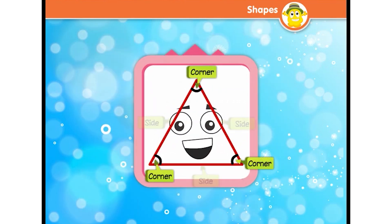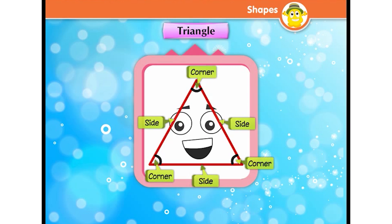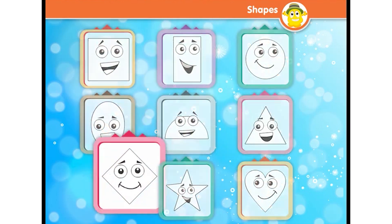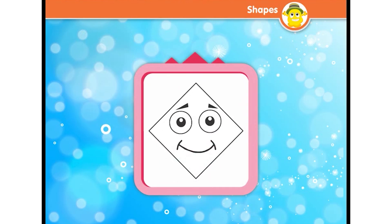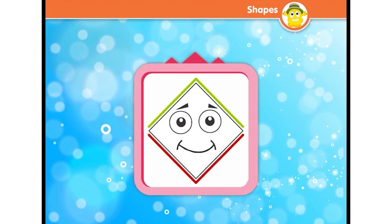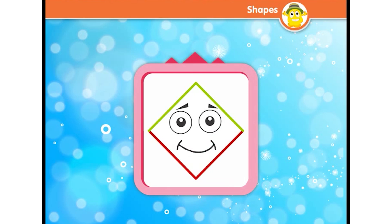I have three corners and three sides — who am I? Yes, I am a triangle! I am like two triangles joined end to end, like a kite — who am I? Yes, I am a diamond!